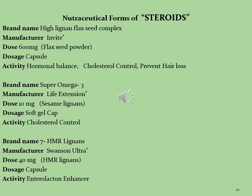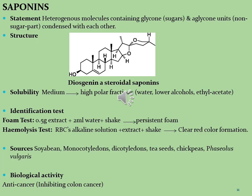These are some important pharmaceutical brands of steroid molecules which were missed in our previous lectures. The brands include High Lignan Flaxseed Complex (600 mg/day capsule, hormonal balance and cholesterol control), Super Omega-3 (10 mg/day soft gel, cholesterol control), and 7-HMR Lignans by Swanson Ultra (40 mg/day capsule, enterolactone enhancer).